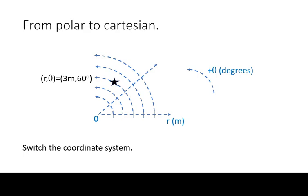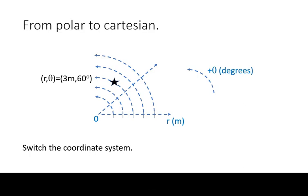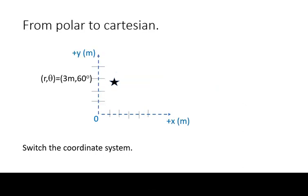First, let's convert the quantity 3 meters at 60 degrees up from the right to Cartesian representation. We start by switching the quantity to be plotted in our new Cartesian representation.